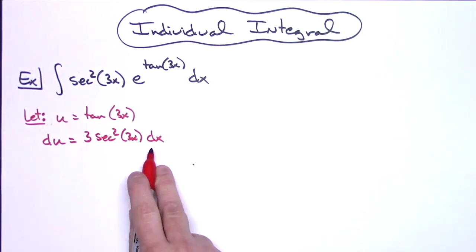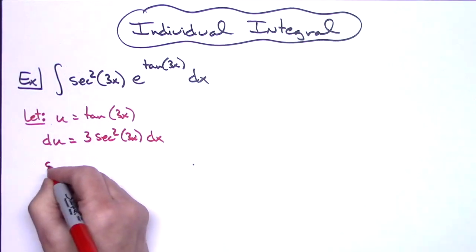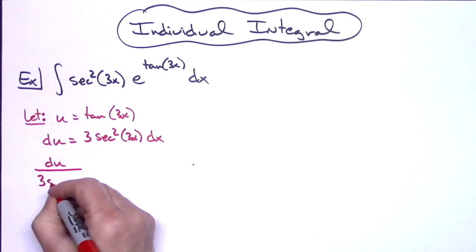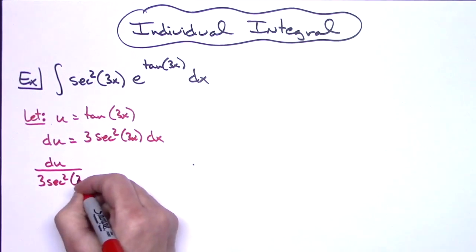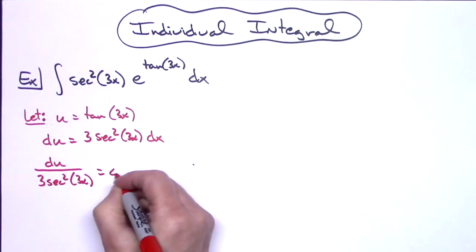I'm going to go ahead and solve for the dx, so I'll have du over 3 secant squared of 3x, and then that's going to be equal to my dx.